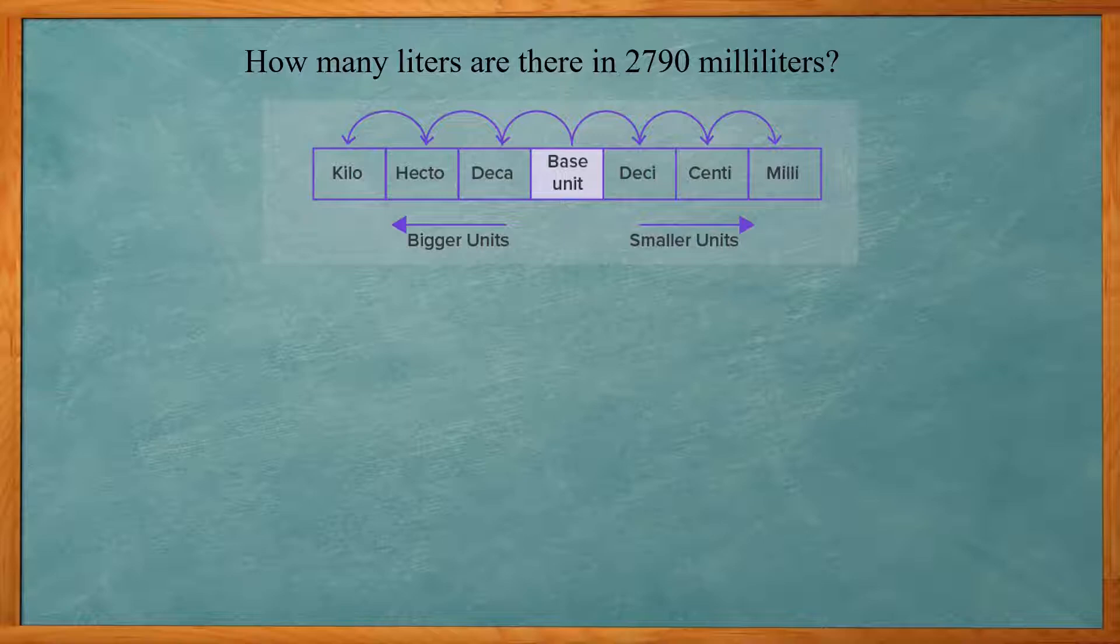If we divide by 10, we have deci, that's like deciliters. If we divide by 100, we get centi, or centiliters. If we divide by 1000, we get milliliters.